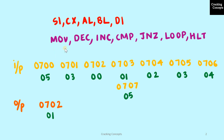The instructions used here will be MOV to transfer data from one location to another, DEC for decrement, INC for increment, CMP for compare, JNZ for jumping if the zero flag is not set, and LOOP to loop to a particular memory address when the value of CX is not zero, and finally HLT for halting the program.